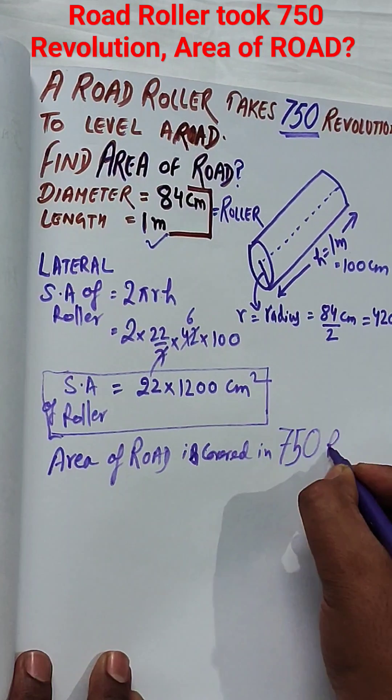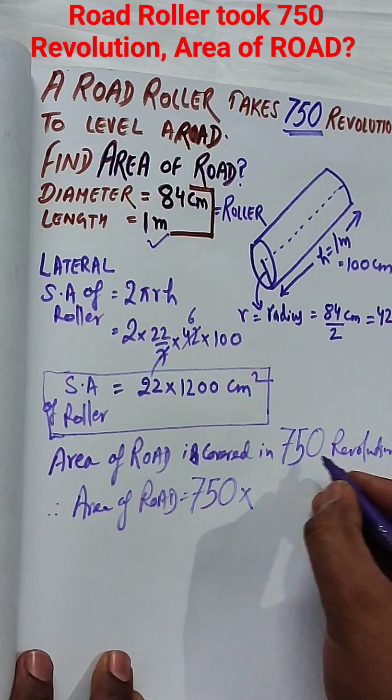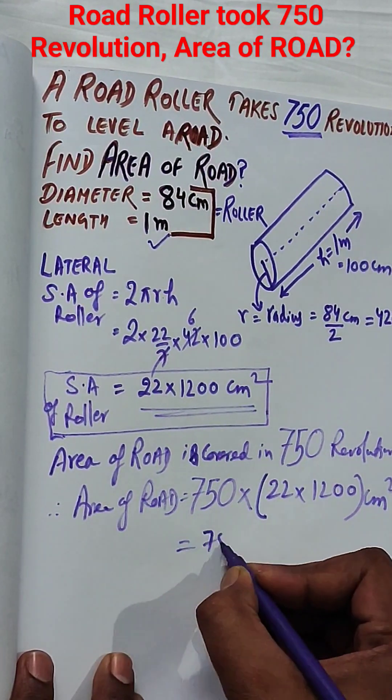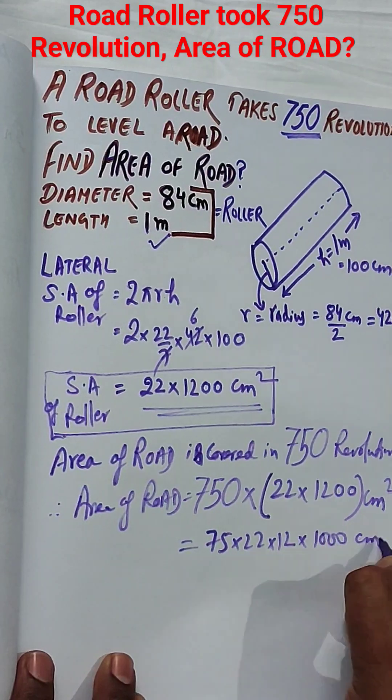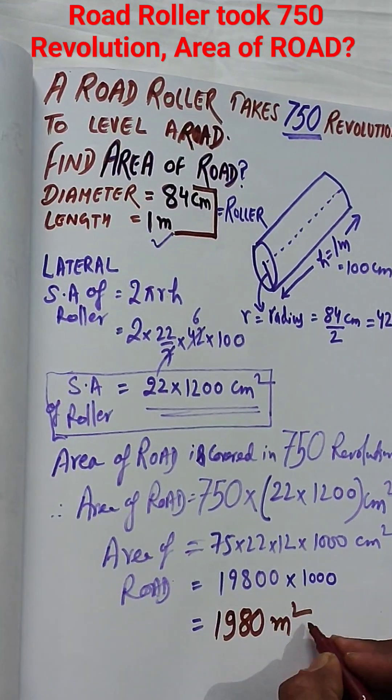The formula is 2πrh. So put up the value of r as 42 and h as 100. We will get the surface area of roller. The roller is taking 750 revolutions, so multiply it by 750 to get the area of road, which is 1980 meter square.